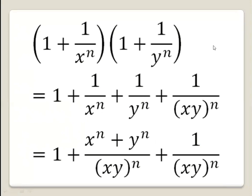We will work with the expanded form: 1 plus (xⁿ + yⁿ)/(xy)ⁿ plus 1/(xy)ⁿ. Now let's find the bound of each term.